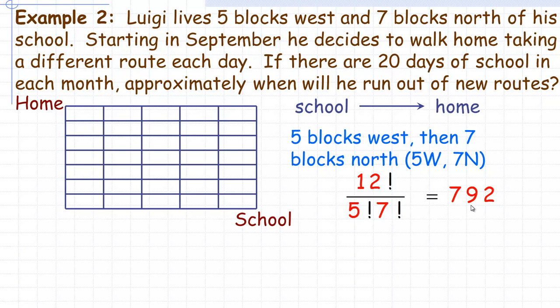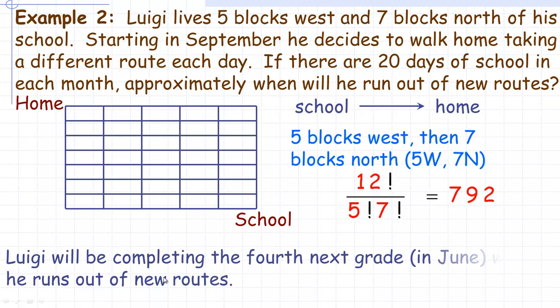If there's twenty days of school, if you divide 792 by twenty, it goes in about forty times. So it's a long time. Forty times, so that's forty months. Let's say there's an average of ten months in a school year, so forty divided by ten would be four school years. He would be completing the fourth next grade, probably around the end of the school year in June, when he runs out of new routes. It's almost 800 different routes to go from school to home.